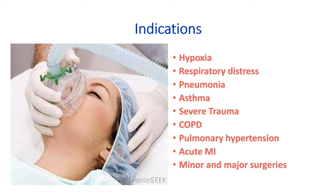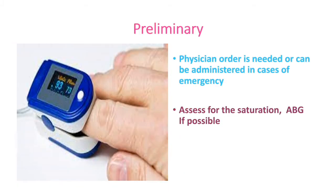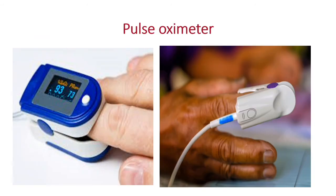Preliminary preparation before oxygen administration includes the physician order, which is needed, or it can be administered in case of an emergency. Also assess the oxygen saturation — that is, arterial blood gas levels — if possible.